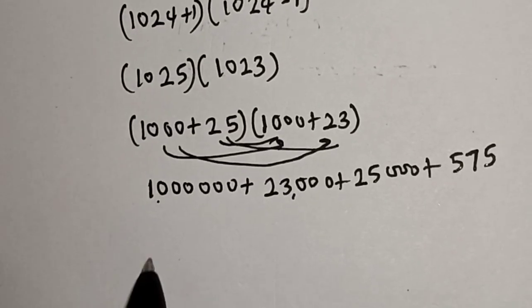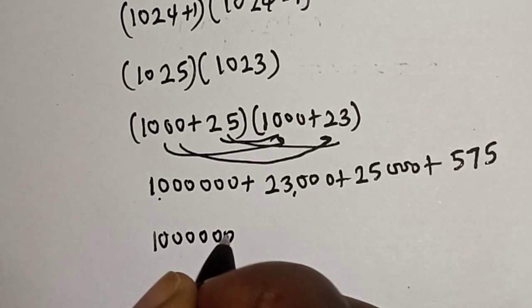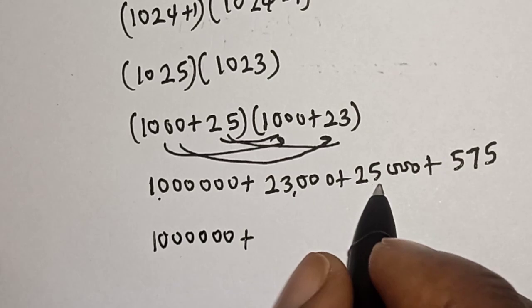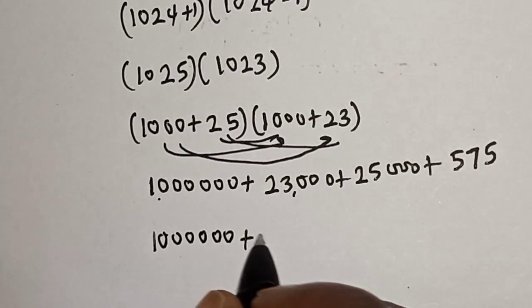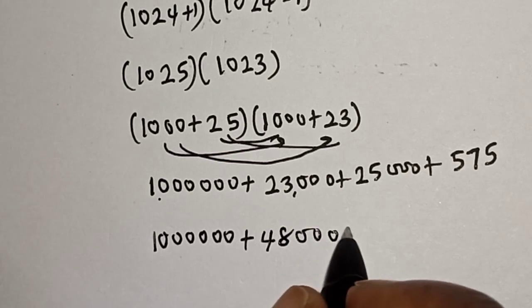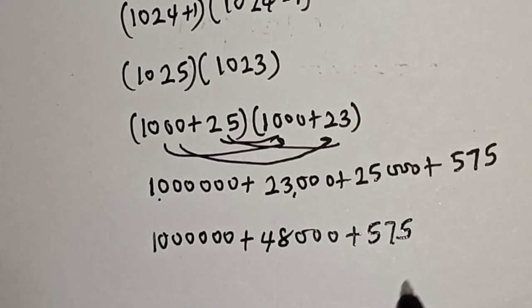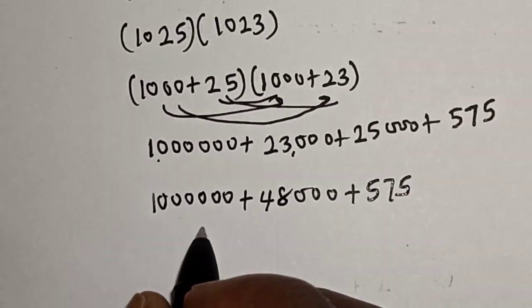Now this is one million plus 23,000 plus 25,000, that is 48,000 plus 575.